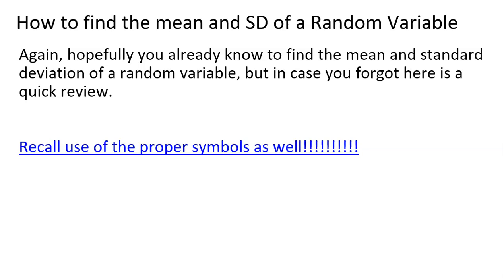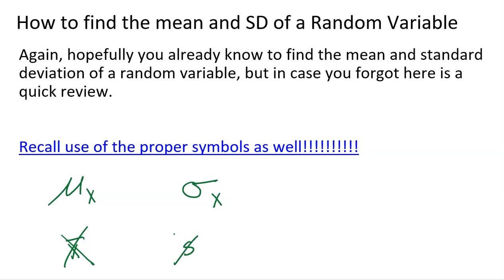How do you find the mean and standard deviation of a random variable? Proper symbols are super important. When we're talking about the mean of many, many repetitions, we're assuming we're looking at all of them. So we're going to use the mean of the random variable X, and the standard deviation is going to be sigma. These are not sample statistics — that would be X-bar for the mean or S for standard deviation. We're using mu and sigma.